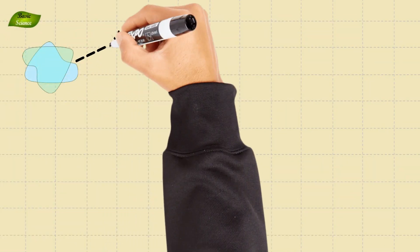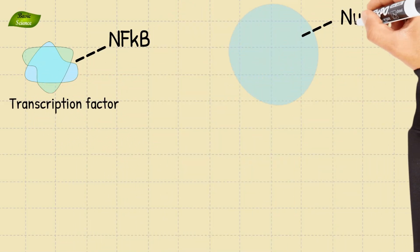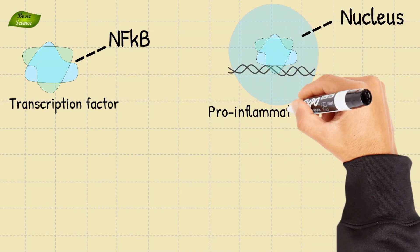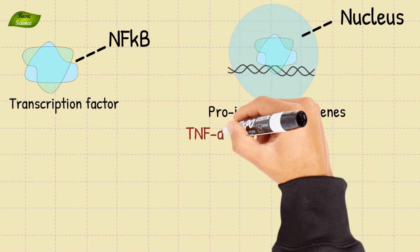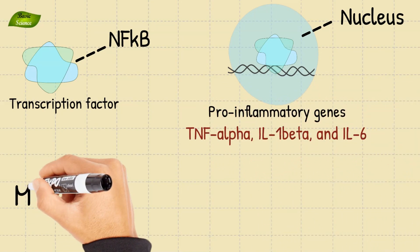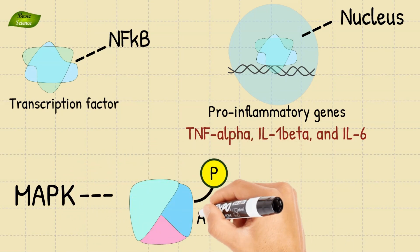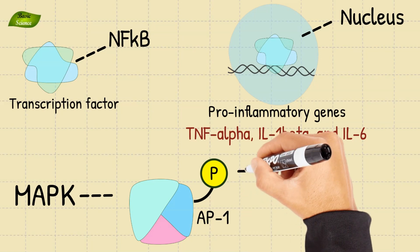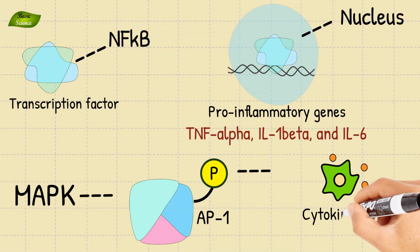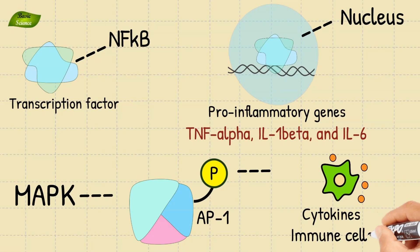NF-κB, a key transcription factor, translocates to the nucleus and induces the expression of pro-inflammatory genes such as TNF-alpha, interleukin-1-beta, and IL-6. Simultaneously, the MAPK pathway contributes to phosphorylating transcription factors like AP-1. These events collectively lead to the production of pro-inflammatory cytokines, which are critical for the activation of immune cells.